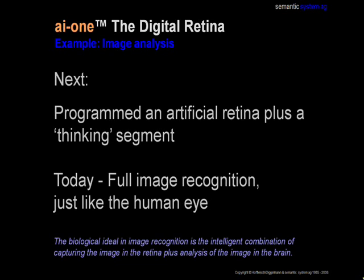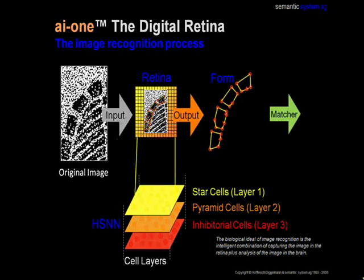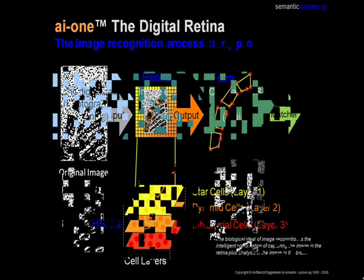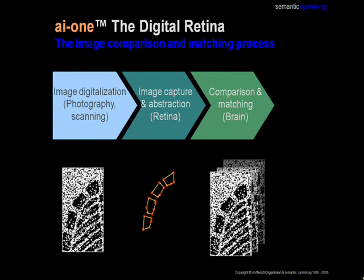Next, we programmed an artificial retina plus a thinking segment. Now we are enabled to achieve image recognition just like a human eye. The digital retina contains three layers of cells: star cells, pyramidal cells, and inhibitory cells. These three layers are in charge of image recognition. The abstracted forms are handed to the matcher. The matcher compares found patterns — depending on the field of application — one against one, one against all, or all against all.